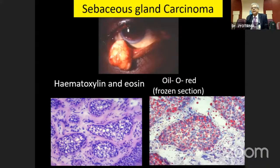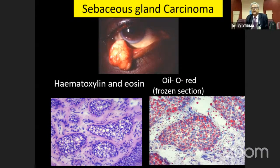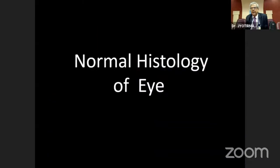In the case of sebaceous gland carcinoma, you can see lobules of fat-laden foamy tumor cells, which are lipid-laden. This lipid can be stained with frozen sections and oil red O stain, which comes out very nicely.